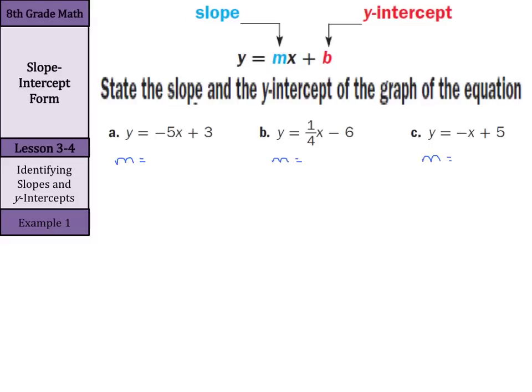Our slope is the m portion, which is just to the left of the x — it's what we're multiplying the x by. In part a, we have negative 5. In part b, we have one-fourth. Something cool happens in part c — it's a negative x. Another way to write part c is y equals negative 1x plus 5, so our slope is actually negative 1.